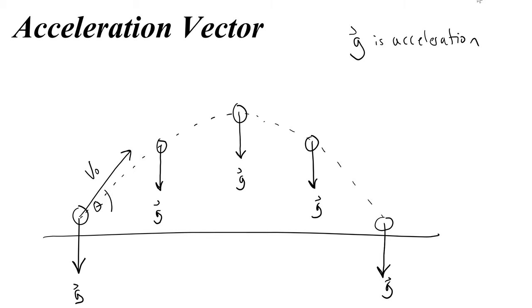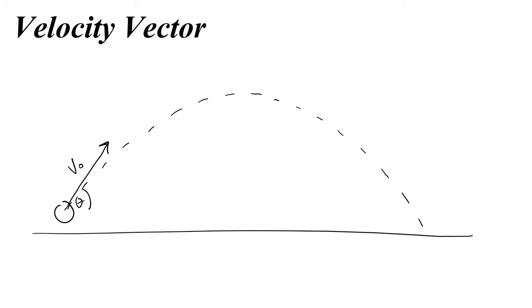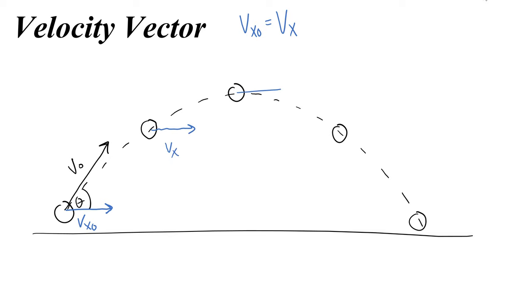Now let's look at what the velocity vector would look like during this trajectory. We redraw the picture with initial velocity v₀ at angle theta, and draw the projectile at the middle, at the top, back down at the middle, and right before it hits the ground. The x-component of velocity, vx, doesn't change — it's the same at every point in the projectile's path — because there's no acceleration to the right or left; gravity doesn't pull to the right, it pulls down.